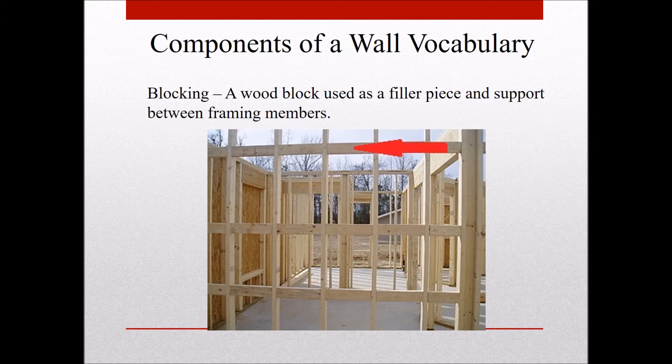One of the things you need to know when laying out walls is the vocabulary, so we're going to start by talking about the parts of the wall. This arrow is pointing to blocking, which is nothing more than a piece of wood nailed between framing members — you can see it's nailed between studs. Most likely this block was used for cabinetry. A common practice is to put blocking between studs in a kitchen so the cabinetmaker has something to screw cabinets into.